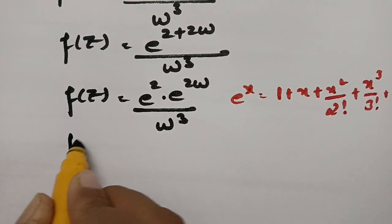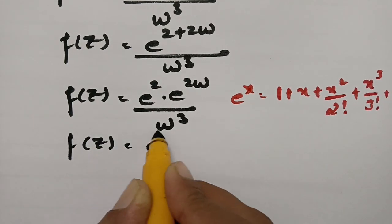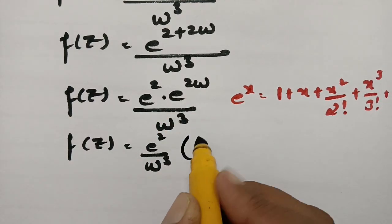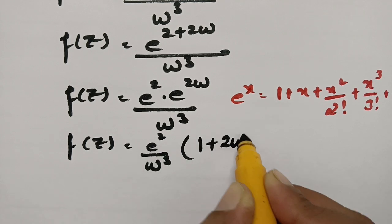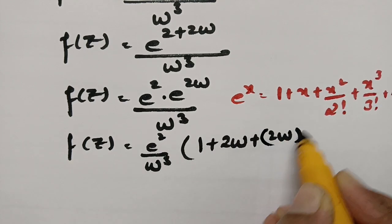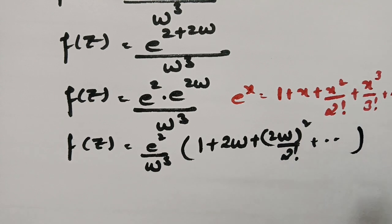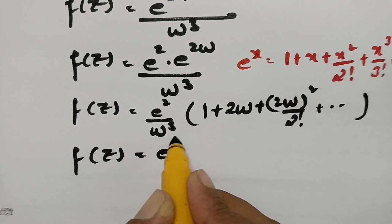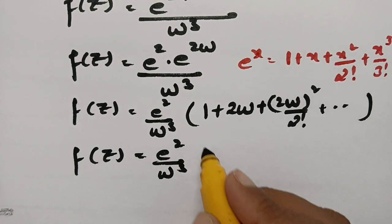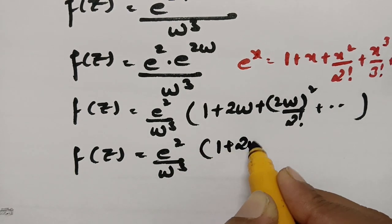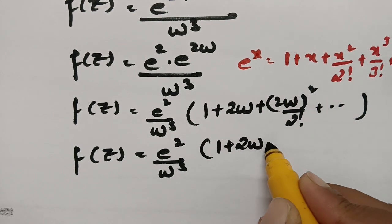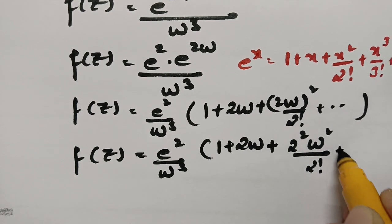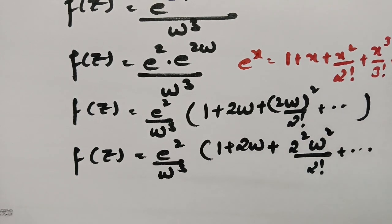So f(z) = e² / w³ multiplied by the expansion of e^(2w). In the form e^x with x = 2w, this becomes: 1 + 2w + (2w)²/2! + (2w)³/3! + ... and so on. So f(z) = e²/w³ · (1 + 2w + 2²w²/2! + ...).